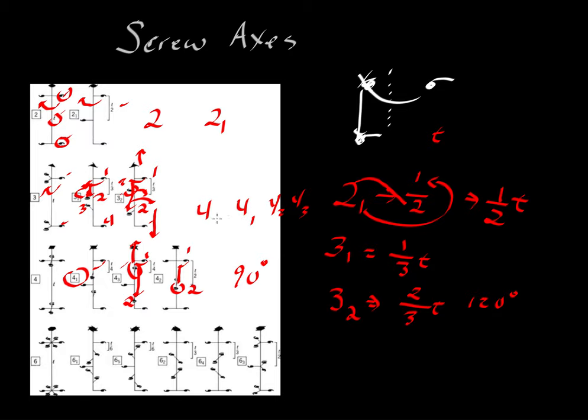So whether we have a one, two or three subscript or no subscript at all, it's telling us about the translation distance. And it gives us unique patterns.